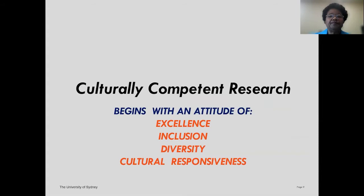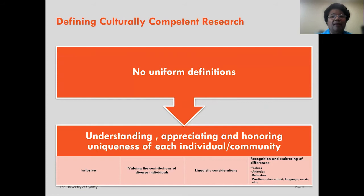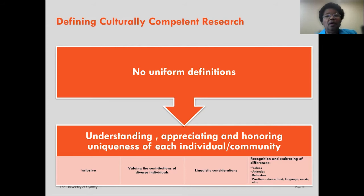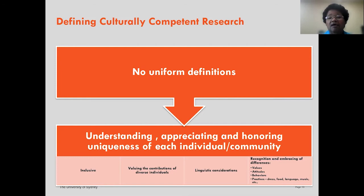Culturally competent research begins with an attitude of excellence, inclusion, diversity, and cultural responsiveness. There are no uniform definitions, but what you find in common is understanding, appreciating, and honoring the uniqueness of each individual and community. Key concepts include inclusiveness, valuing the contribution of diverse individuals, acknowledging linguistic considerations, and recognizing differences in values, attitudes, behaviors, and practices — such as dress, food, language, and music.